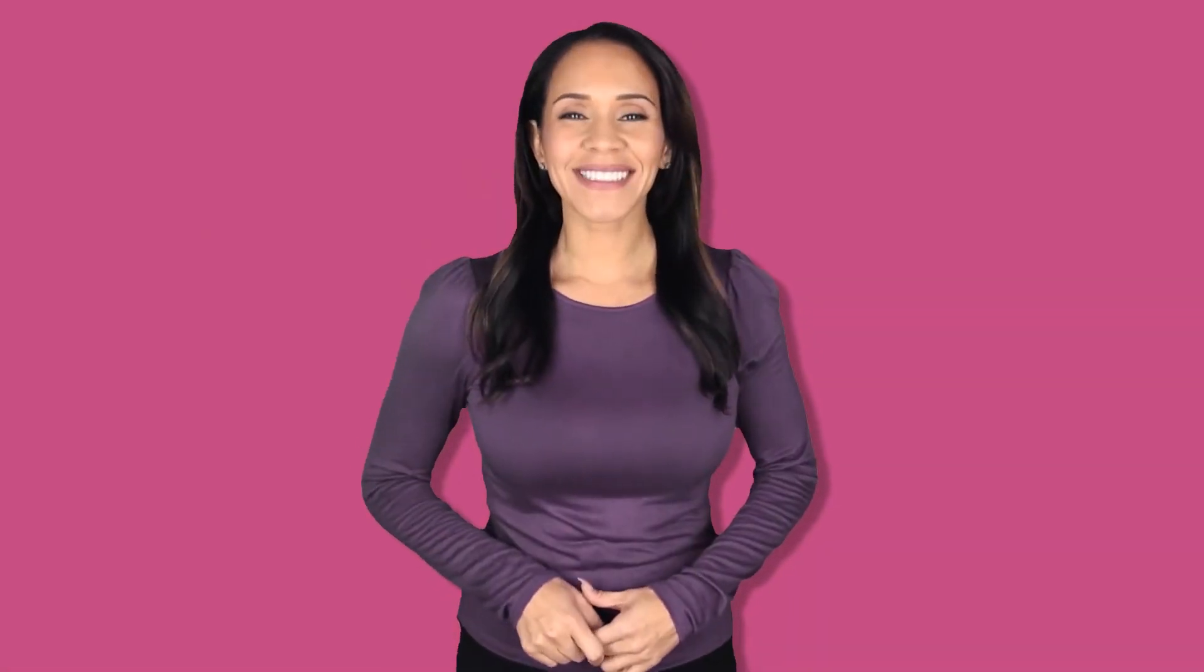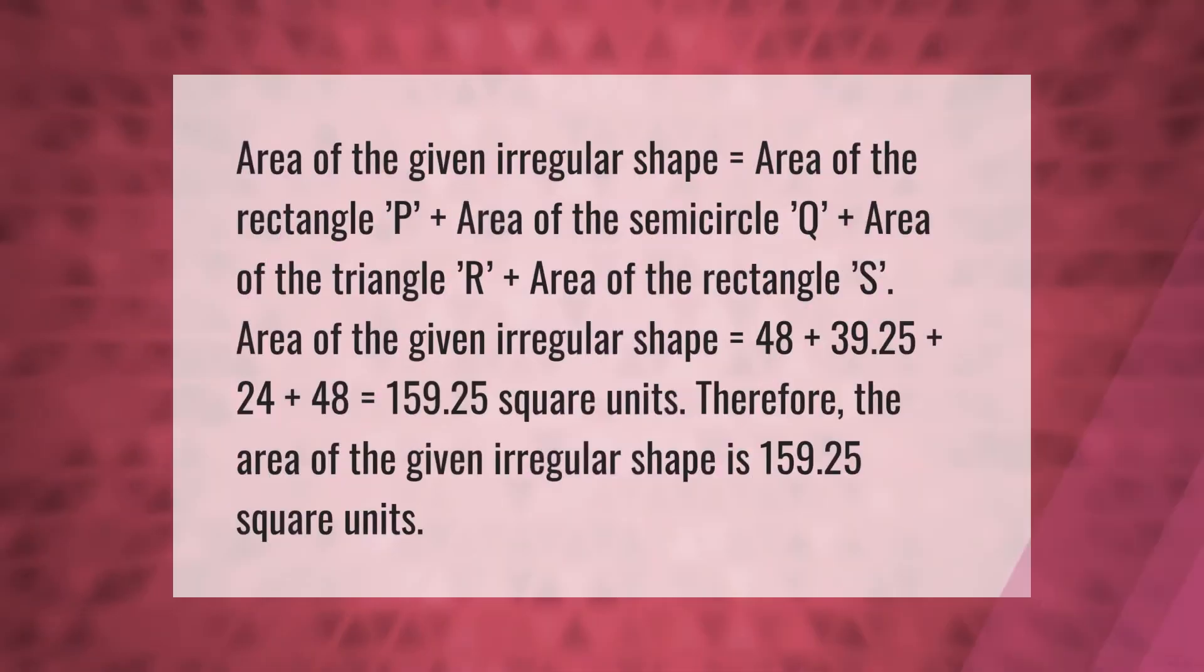Area of the given irregular shape = Area of the rectangle 'P' + Area of the semicircle 'Q' + Area of the triangle 'R' + Area of the rectangle 'S'.